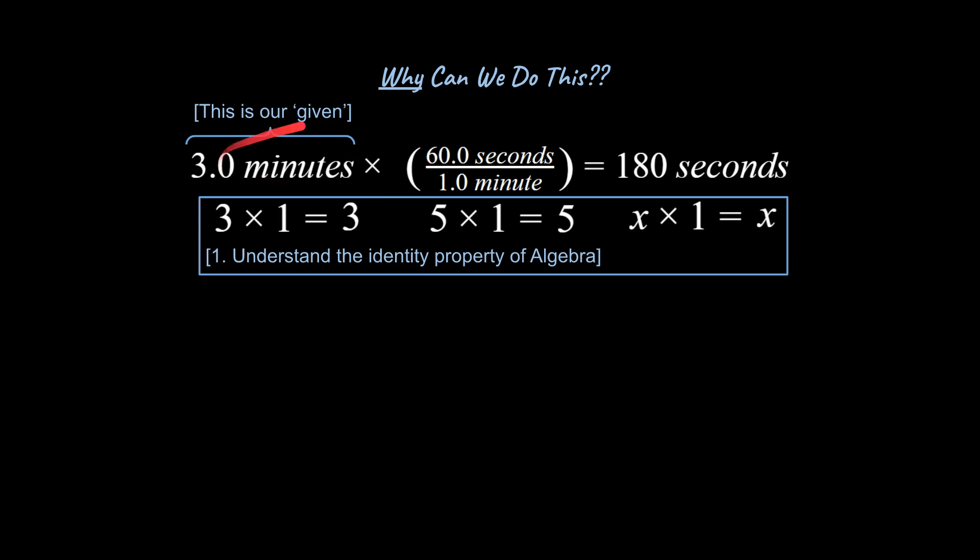We can take our given and multiply it by a fraction that's equivalent to one and get the same amount of stuff counted differently. What do you mean? I mean, three minutes is the same amount of time as 180 seconds. It's just counted differently.